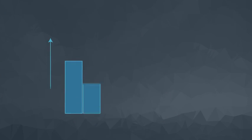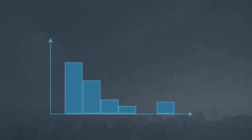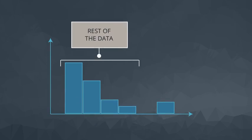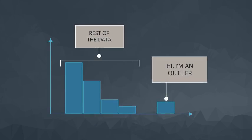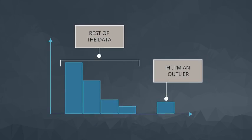My usual method for detecting outliers isn't very scientific. Usually, I just look at a histogram and see if the point is really far from any of the other data points. A quick plot of your data can often help you understand a lot in a short amount of time.